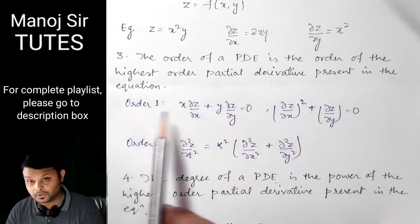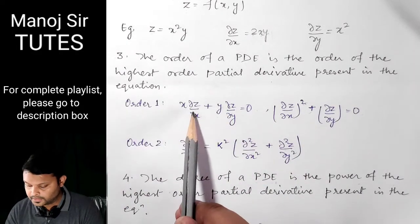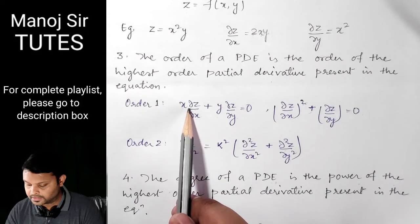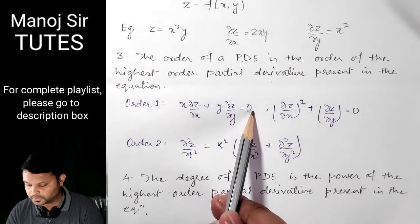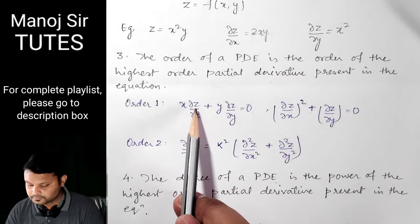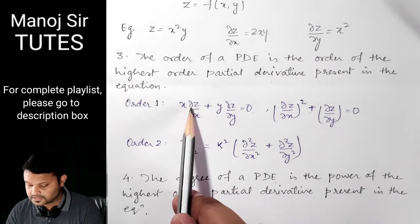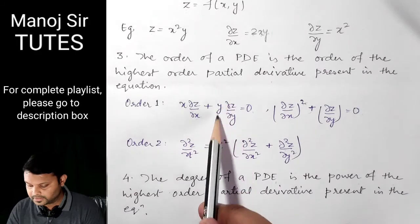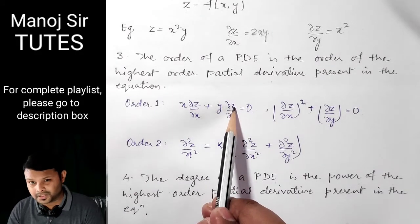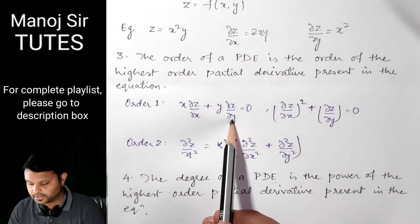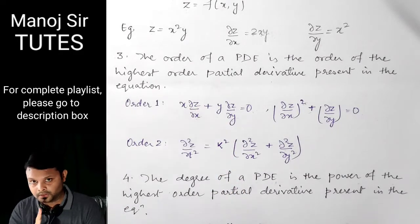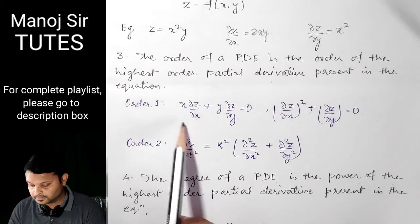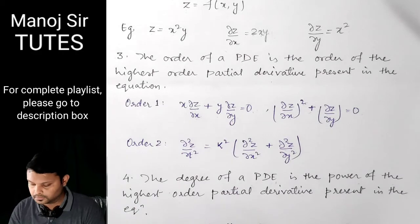Let us see two examples for Order 1. In the first example: X times DEL Z upon DEL X plus Y times DEL Z upon DEL Y. Here the order of DEL Z upon DEL X is 1, because we have differentiated Z partially with respect to X only once. Similarly, in the second term, Z is differentiated partially with respect to Y — the order is also 1. So for this complete equation, the order is 1.